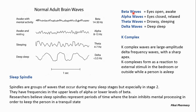Beta waves indicate that the person is awake with eyes open, whereas alpha waves denote that the person's eyes are closed and they are in a relaxed state. Theta waves indicate that the person is in a drowsy or sleeping state, and delta waves show up when the person is in a deep sleep condition. Besides these waves, there also occur K-complexes and sleep spindles.